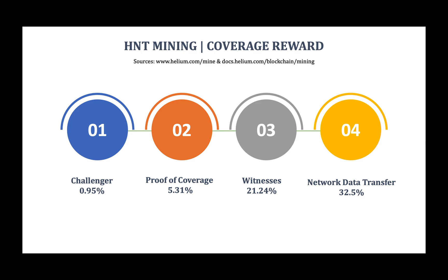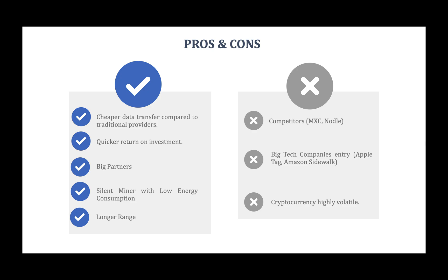Now let's look at the pros and cons of joining the Helium network. Compared to traditional providers, Helium is much cheaper for businesses transferring data packets from IoT devices. There's also a cheaper cost of entry for individuals hosting hotspots, with prices starting at around $500 per hotspot on average. Helium also offers a quicker return on investment — up to a month for some hotspots, or even less depending on your location and the number of witnesses.